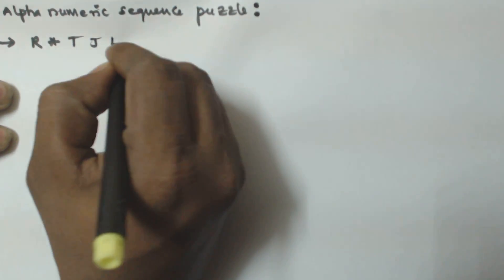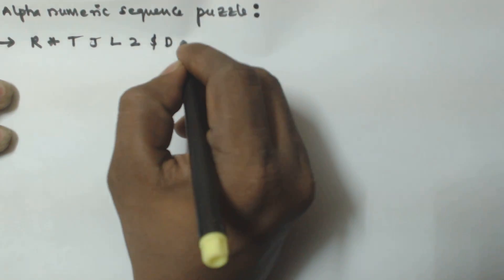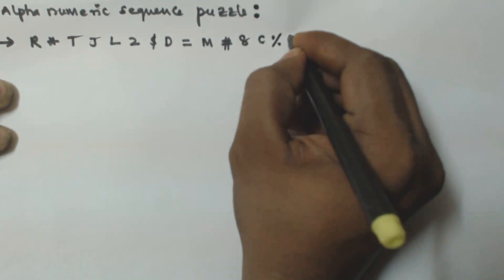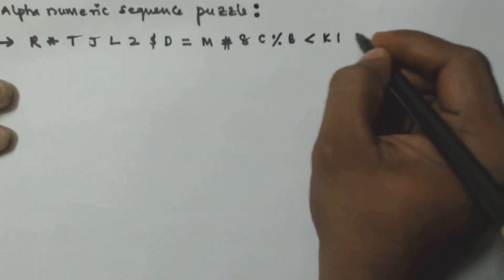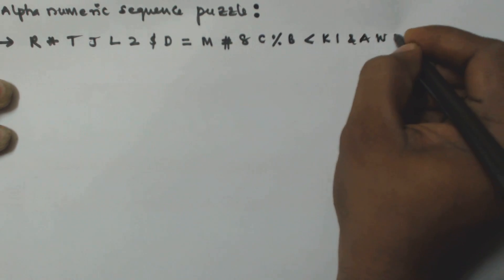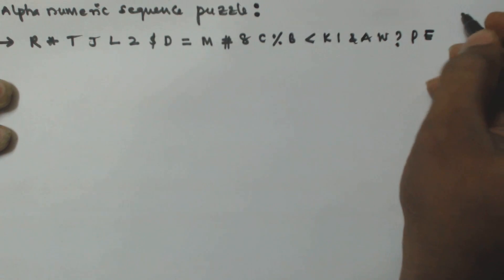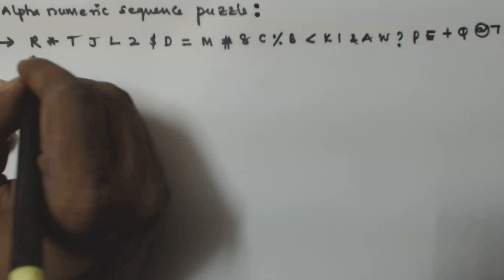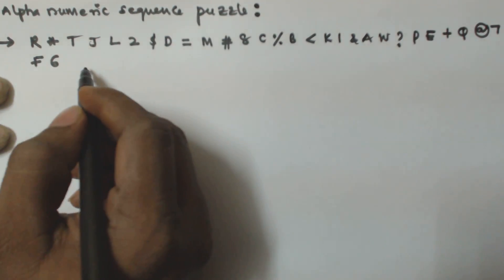Hello friends, in this video we will see another problem based on the alphanumeric sequence puzzle. The alphanumeric series given is: R * T J L 2 $ D = M # 8 C % B < K 1 & A W ? P E + Q @ 7 F 6.